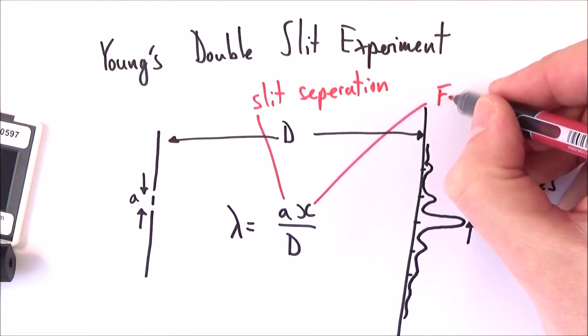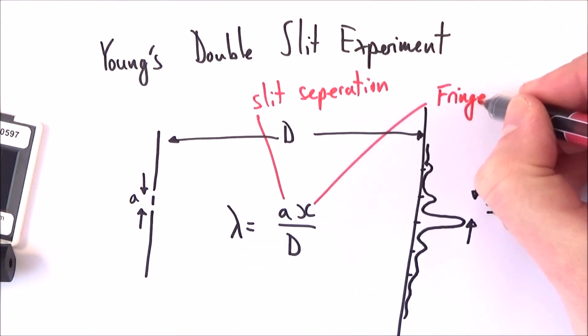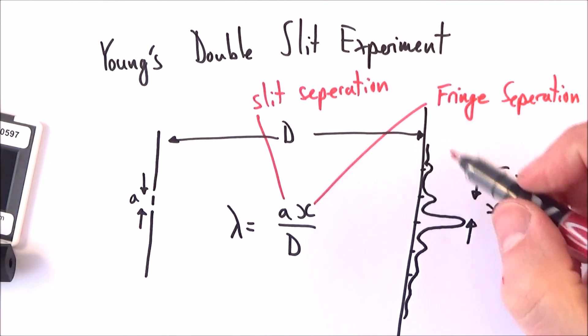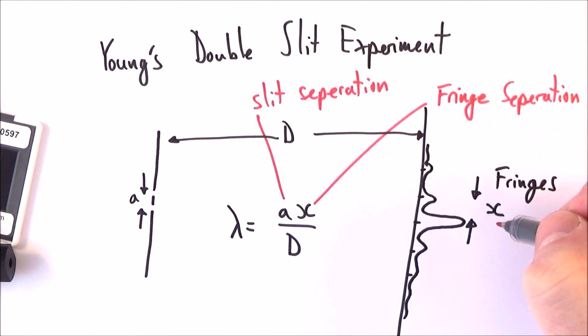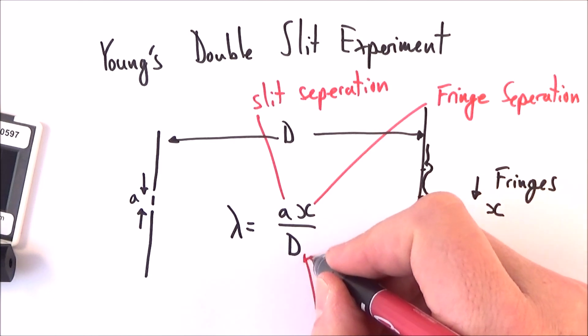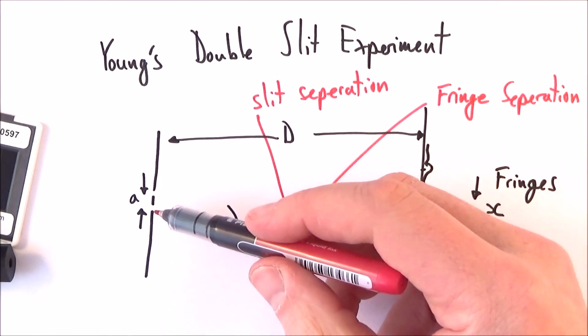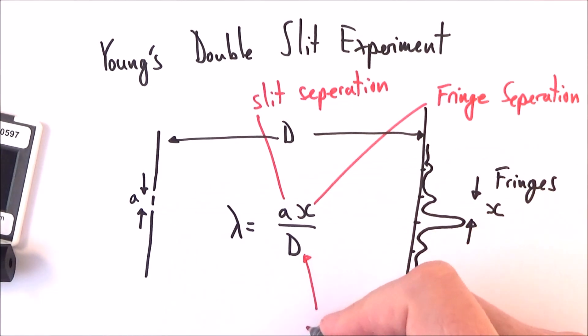X is the fringe separation, and we talk about the light and dark fringes. It's often easier to measure perhaps the distance of 10 fringes and then divide by 10 to get the distance of one, because it's going to be fractions of a millimeter. And then finally, distance from whatever you're projecting the light onto from the actual slit is fairly easy to measure using a meter ruler.